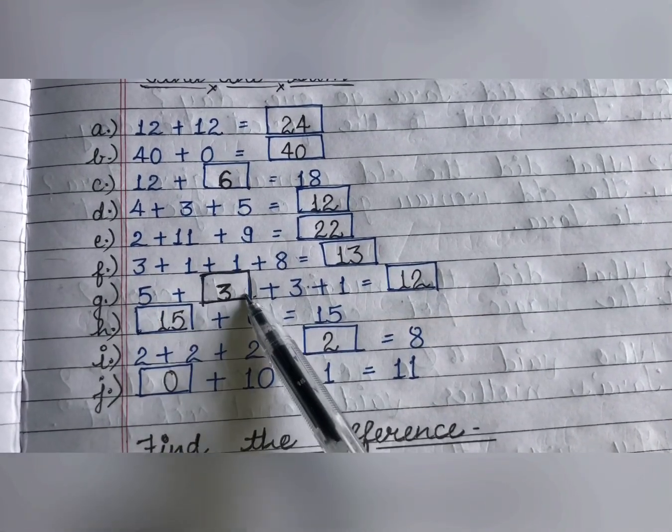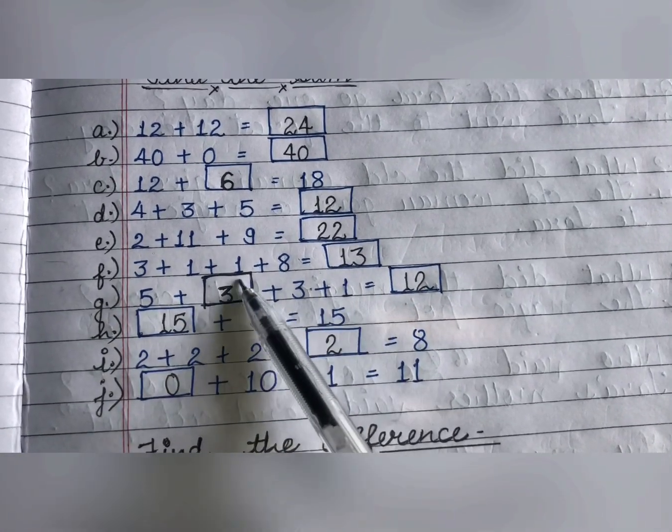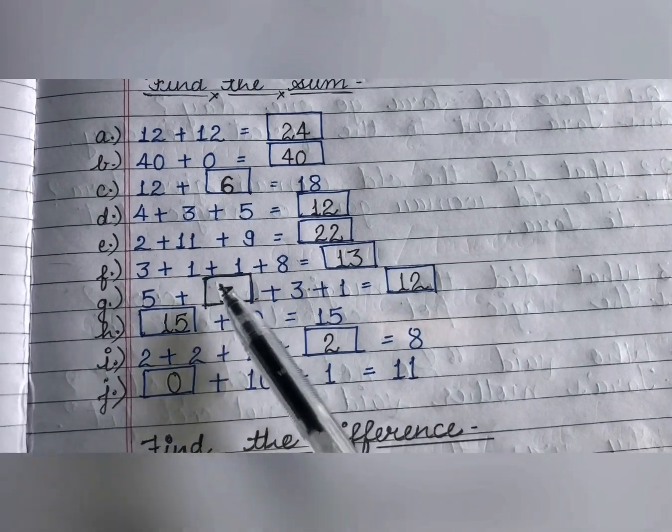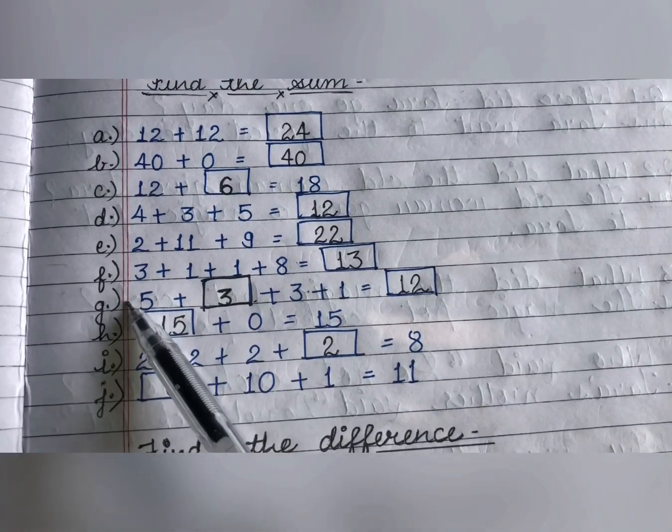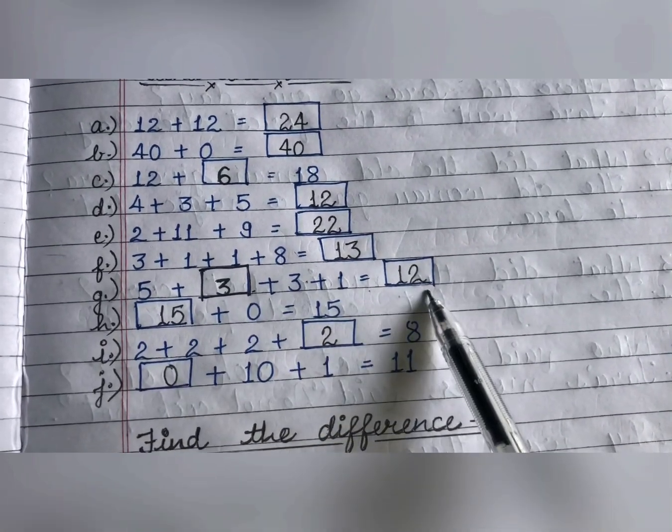Now 5 plus which number plus 3 plus 1? Oh sorry, I am so sorry. I wrote this in block pen by mistake, you have to add all of this. 5 plus 3 plus 3 plus 1. When we add all of these, what do we get? 12.